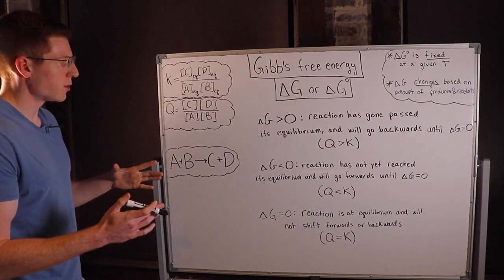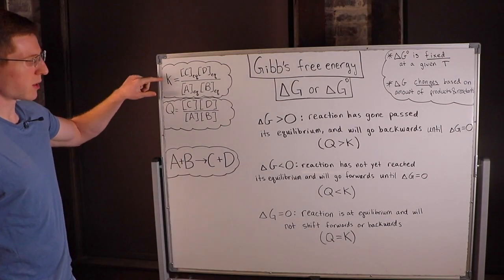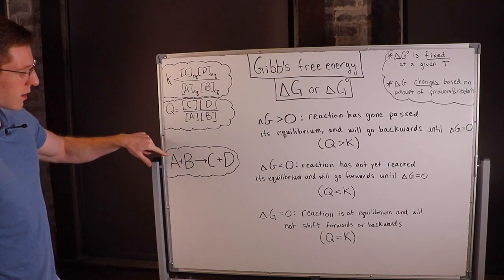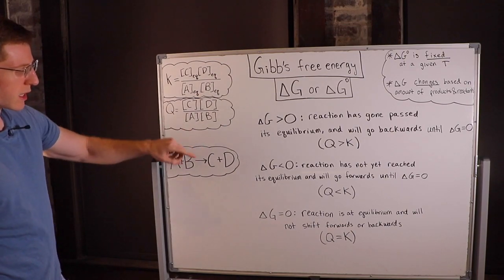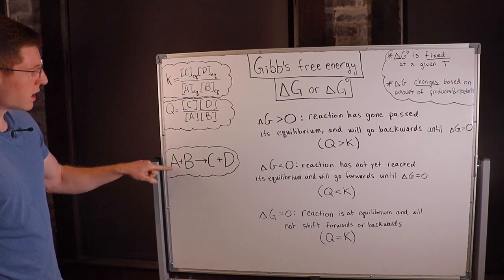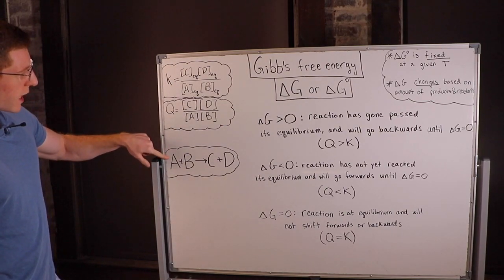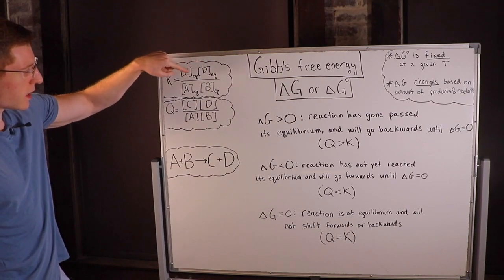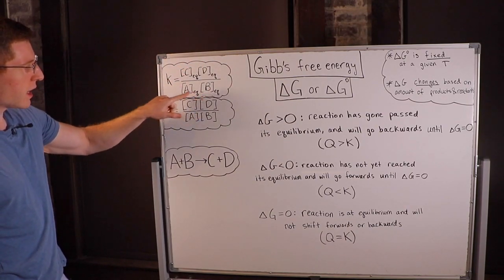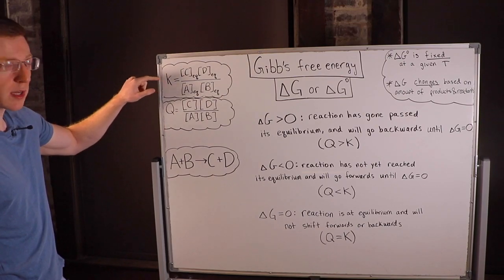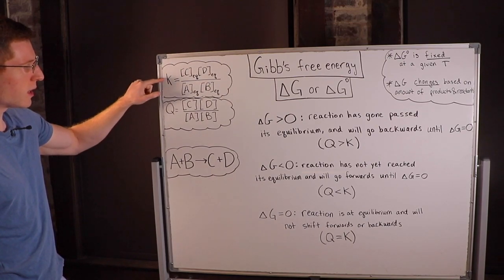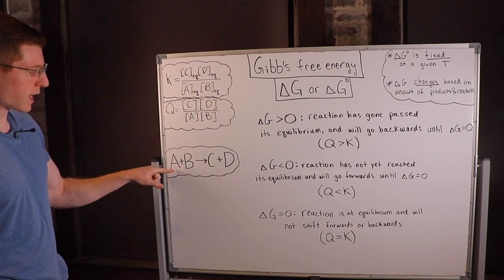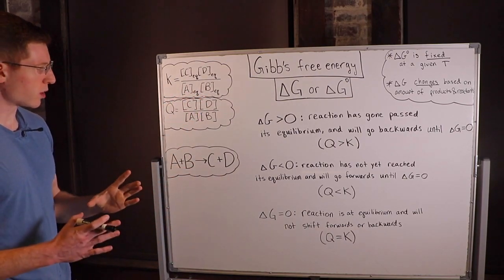A quick reminder on Q and K: K is the equilibrium constant for a given chemical reaction. For the sample reaction A + B → C + D, K equals the products in the numerator over the reactants in the denominator — specifically the equilibrium concentrations of C and D over the equilibrium concentrations of A and B.